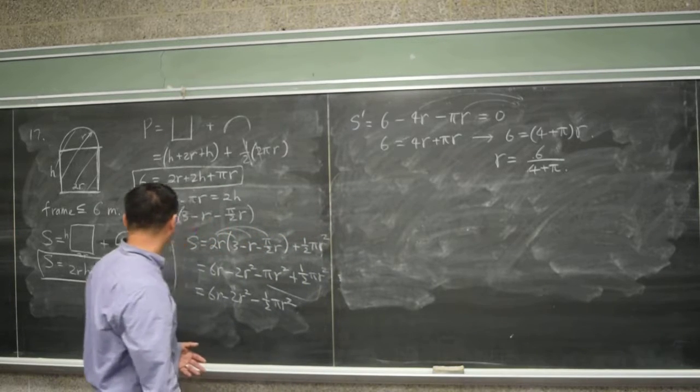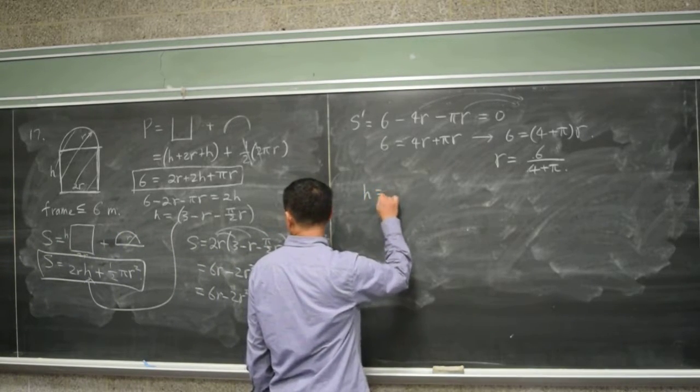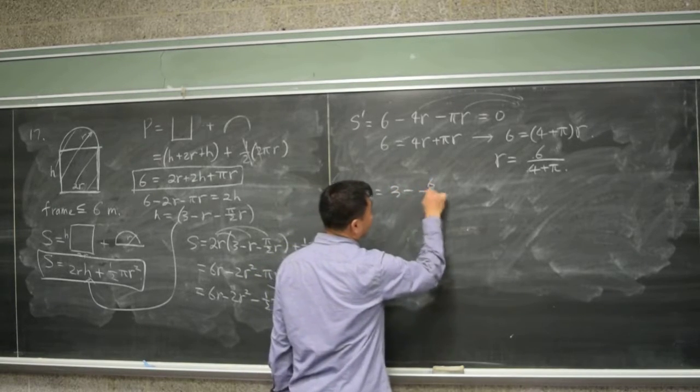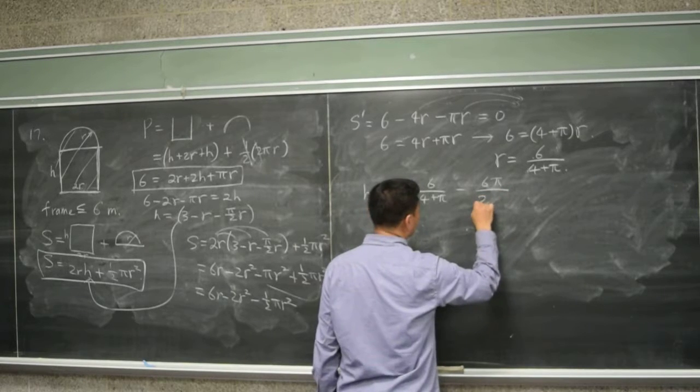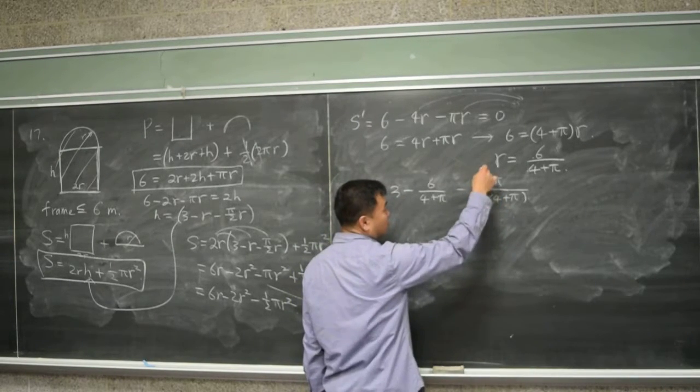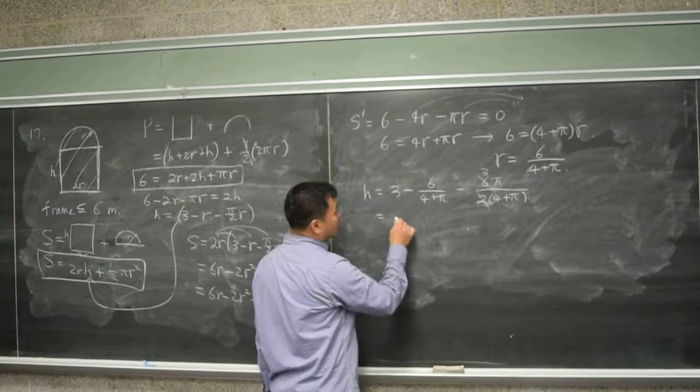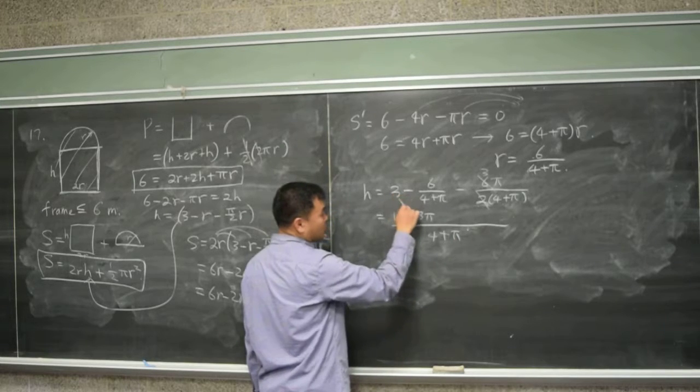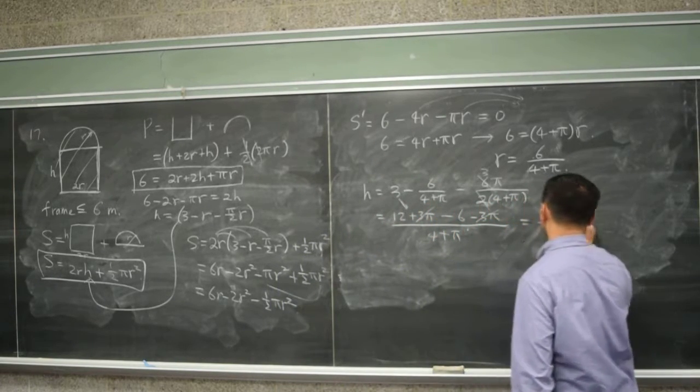And then we plug it back into the original, but before that we should figure out what h is, right? h is three minus six over four plus pi minus six pi over two times four plus pi. There's pi over two times this thing. And because two and six cancels, you get three. And since these two have the same denominator, let's just make everything in the same denominator. So this will be three times four is twelve. Three times pi is three pi over four plus pi. That's what this first one will turn out to be. This is six. That's minus three pi. Three pi, three pi cancels. And you get six over four plus pi.